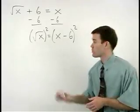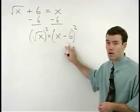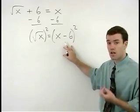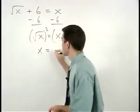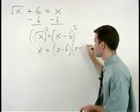And notice that on the right side of the equation, the x minus 6 squared must be thought of as x minus 6 times x minus 6. So we have x equals x minus 6 times x minus 6.